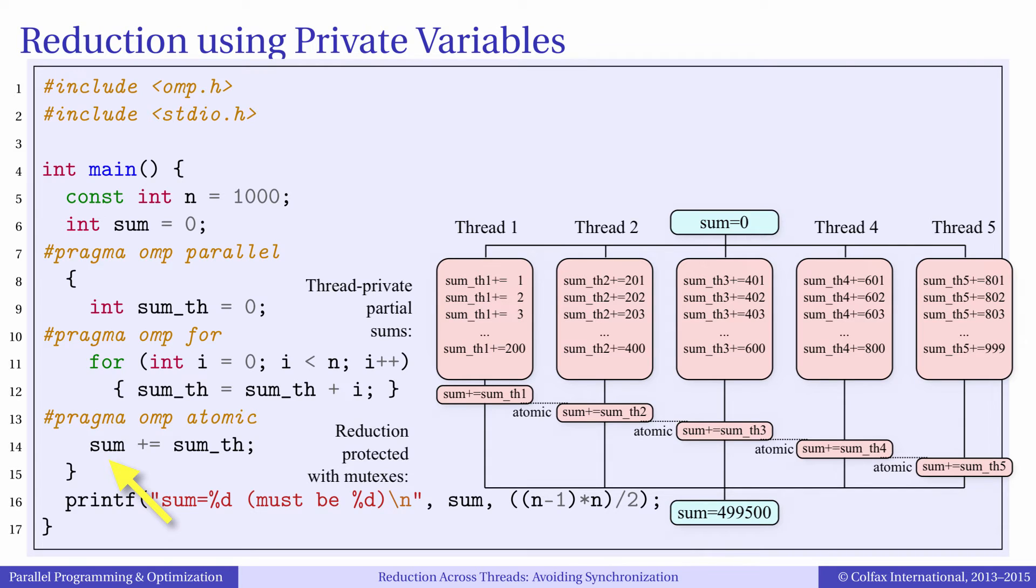We do this using the atomic construct which occurs after the parallel loop but still inside the parallel region. Of course, we still have mutexes in our code. However, their performance impact is greatly reduced.